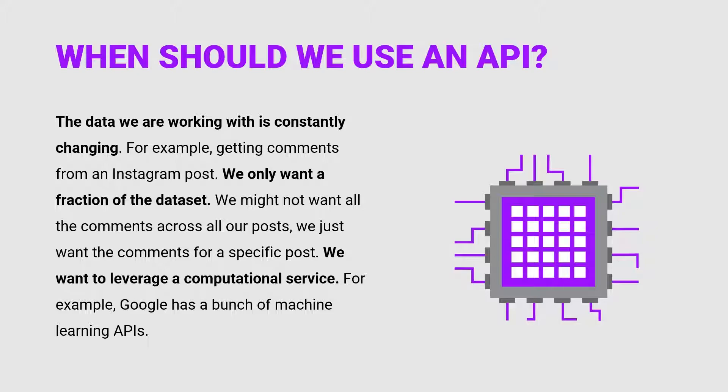Another example is Instagram posts. If I want to get comments or photos from Instagram, I'm probably going to want to use an API because that information is changing so frequently that it really doesn't make sense to download it all at once. Also, if we're only looking for a fraction of the dataset, an API is probably going to be our best bet. A company isn't going to want you to download all their data, but maybe they'll let you access a fraction of it — like some of the reviews about a particular restaurant on Yelp. We don't have to take billions of reviews and store them locally; we really only want a fraction of it.